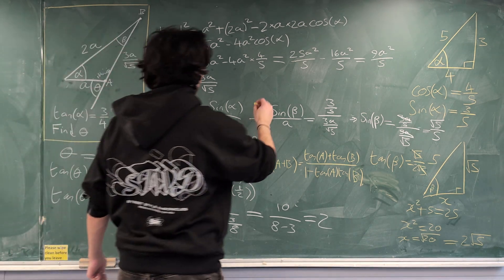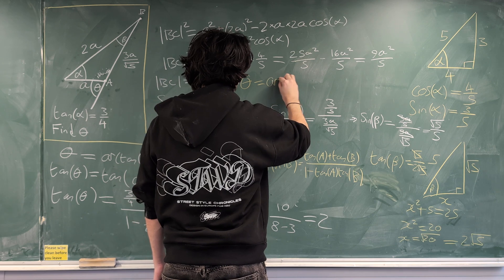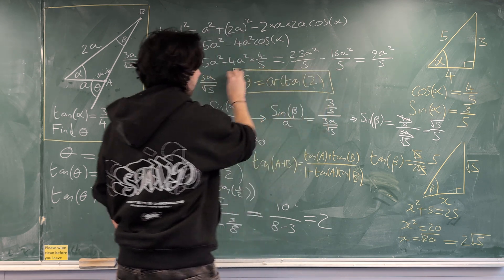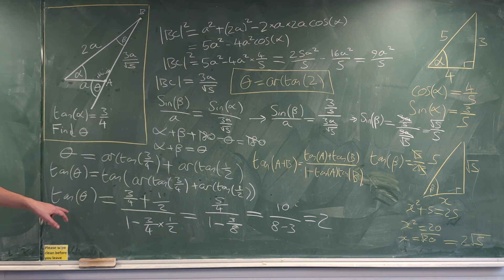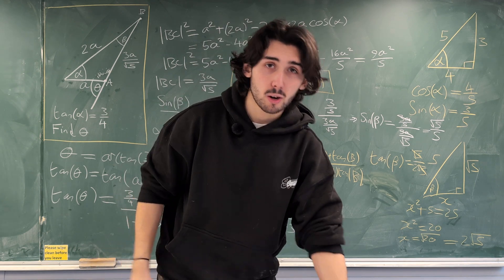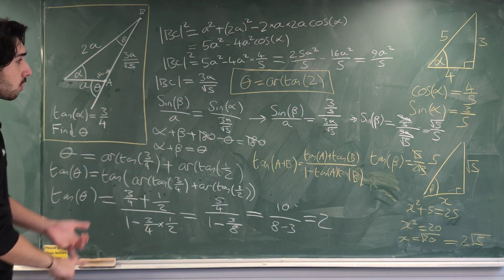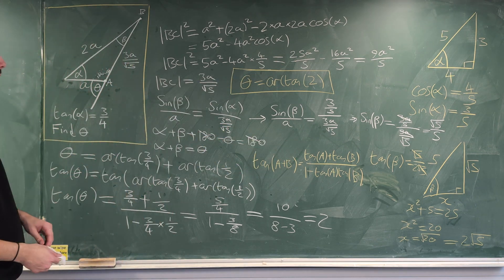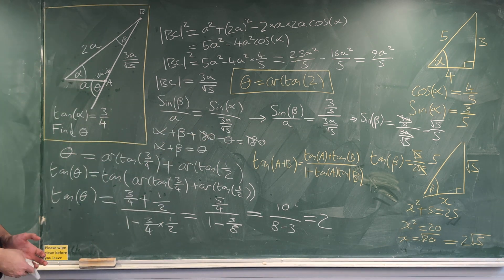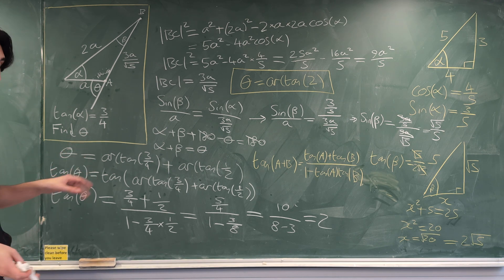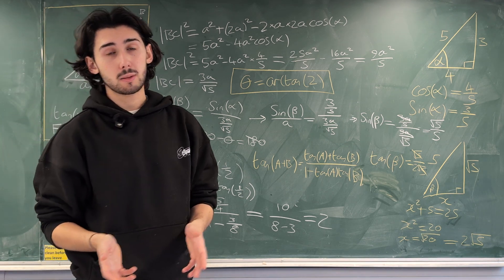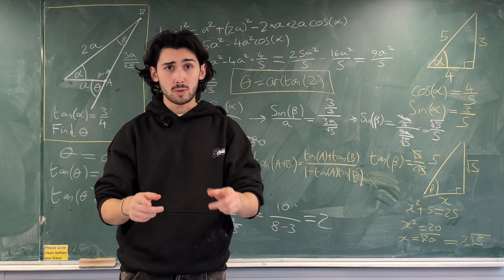So the final answer is theta = arctan(2). Pretty cool question — a lot of simplifying, a lot of steps. We had to use the cosine rule, the sine rule, two triangles to work out trig ratios without a calculator, and the compound angle formula. Quite a lot for a question that looked more innocent than it actually was! Anyway, thank you so much for watching — please let me know if you want more videos like this, and I'll see you in the next one.